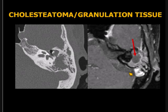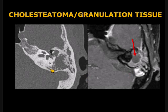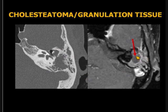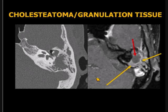It's important to know that cholesteatoma and granulation tissue may coexist. This patient has an aggressive middle ear and mastoid lesion. Centrally, we have the non-enhancing cholesteatoma. Peripherally, we have the enhancing granulation tissue.